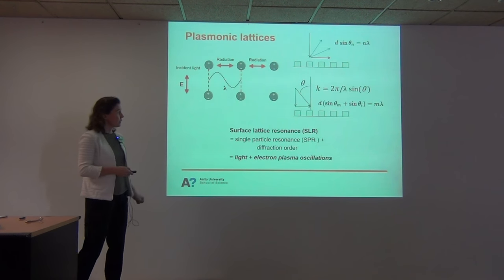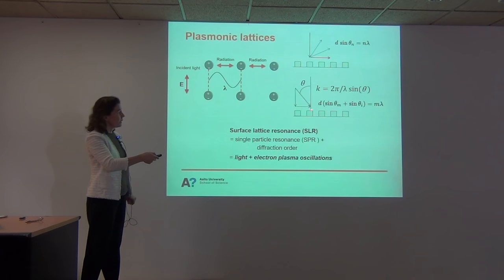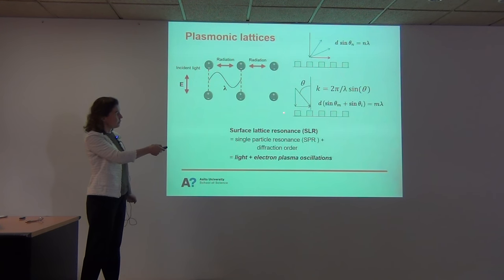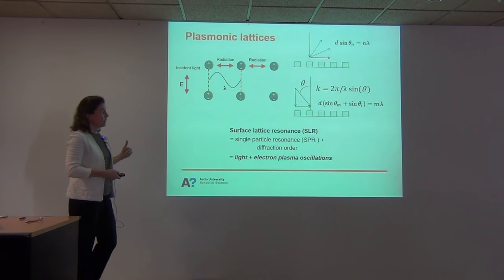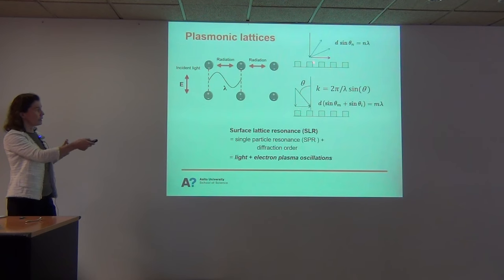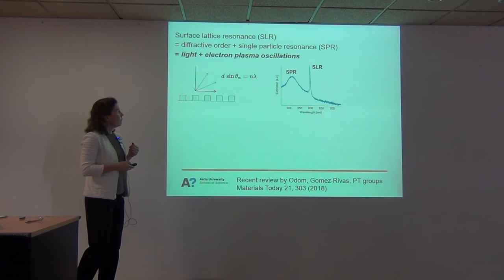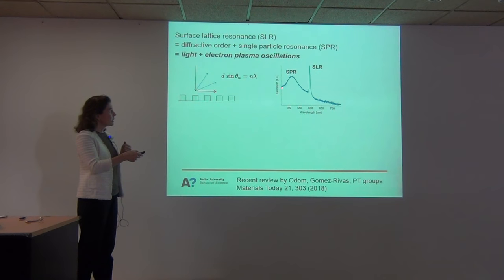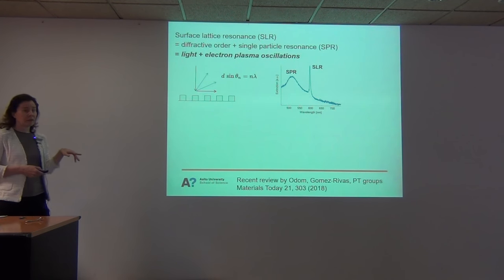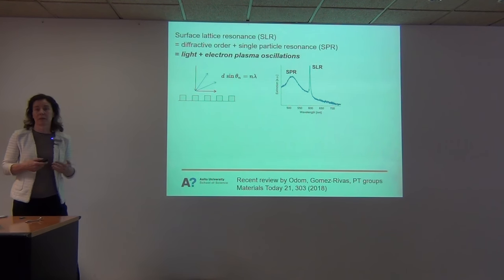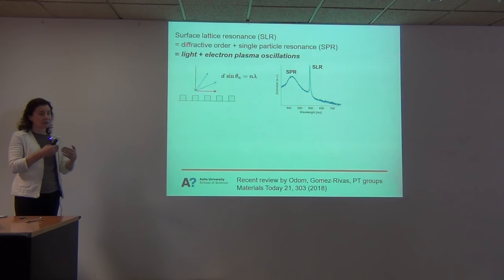The character of this mode is that it's largely light — because the diffracted order would be just light — but since it contains also the single particle resonance, it partly contains the electron plasma oscillation that takes place in the metal. That's the kind of hybrid we can create in these systems. It can have a dispersion because this mode may have in-plane momentum, and you can excite it by exciting with an angle. The absorption spectrum shows the single nanoparticle resonance, which is typically very broad, and when it hybridizes with the diffracted order — which is very narrow — you get a Fano-shape resonance. That's typical when you combine a broad and narrow resonance.